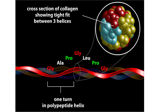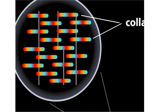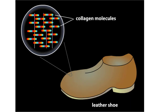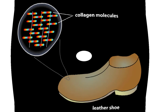Individual collagen molecules cross-link to other collagen molecules to form tough collagen fibrils. Collagen, from which gelatin is derived, is a poor source of essential amino acids — the amino acids that the body cannot manufacture and must receive from the diet.